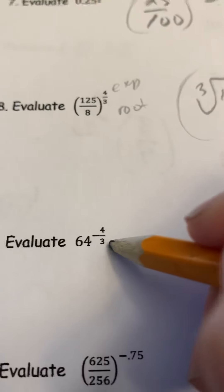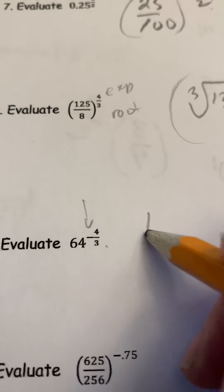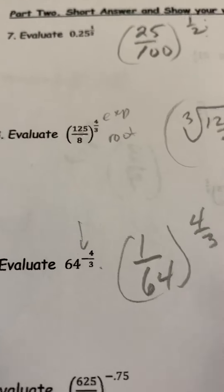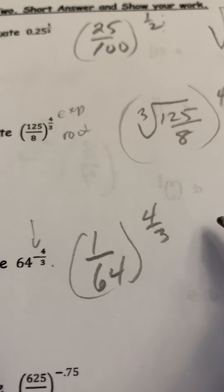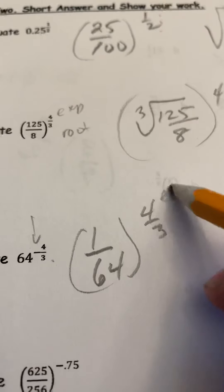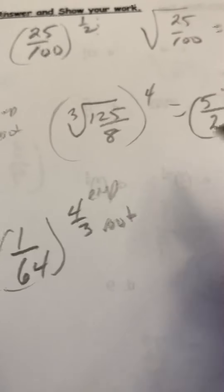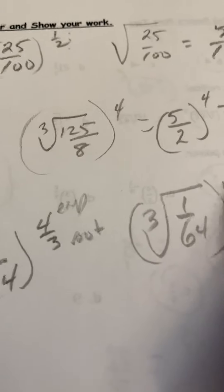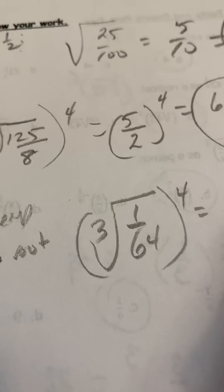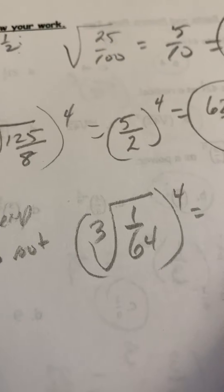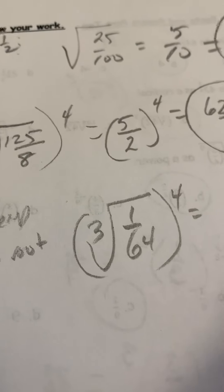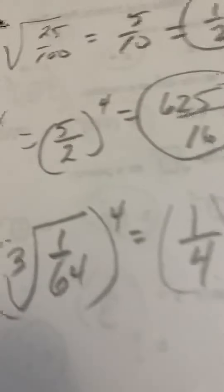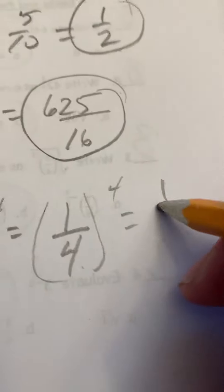The first thing we deal with here is the negative exponent, so it becomes 1 over 64 to the four thirds. Let's do this step by step — it's never a race. Exponent over root: we want the cube root of 1 over 64, then raise to the exponent 4. The cube root of 1 is 1, and the cube root of 64 is 4.